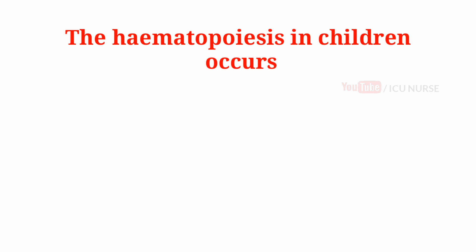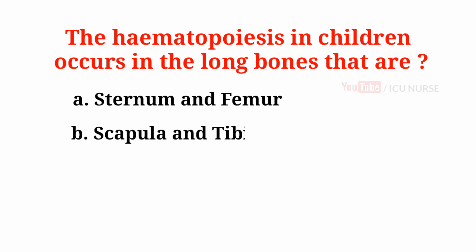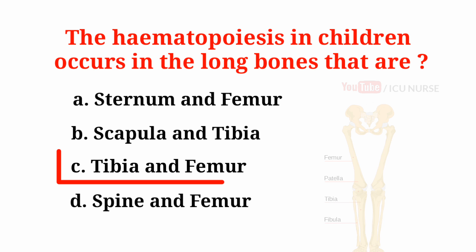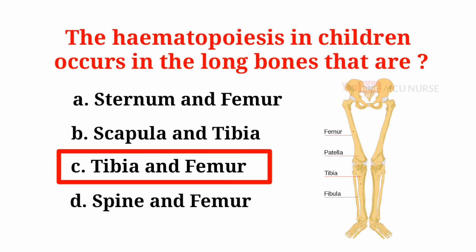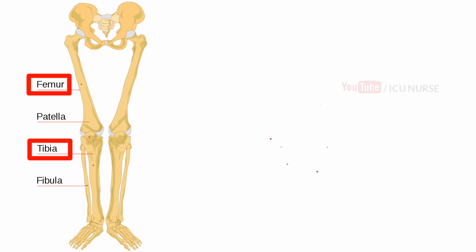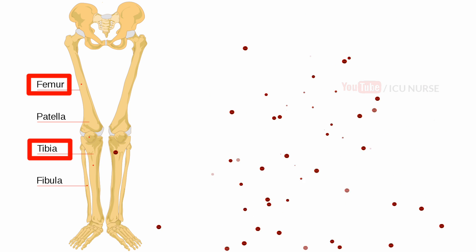The hematopoiesis in children occurs in the long bones that are: A. Sternum and femur, B. Scapula and tibia, C. Tibia and femur, D. Spine and femur. And the answer is C. Tibia and femur. Tibia and femur are the long bones in which hematopoiesis occurs in children. The process of formation of blood cells in the body is known as hematopoiesis, especially in the bone marrow.